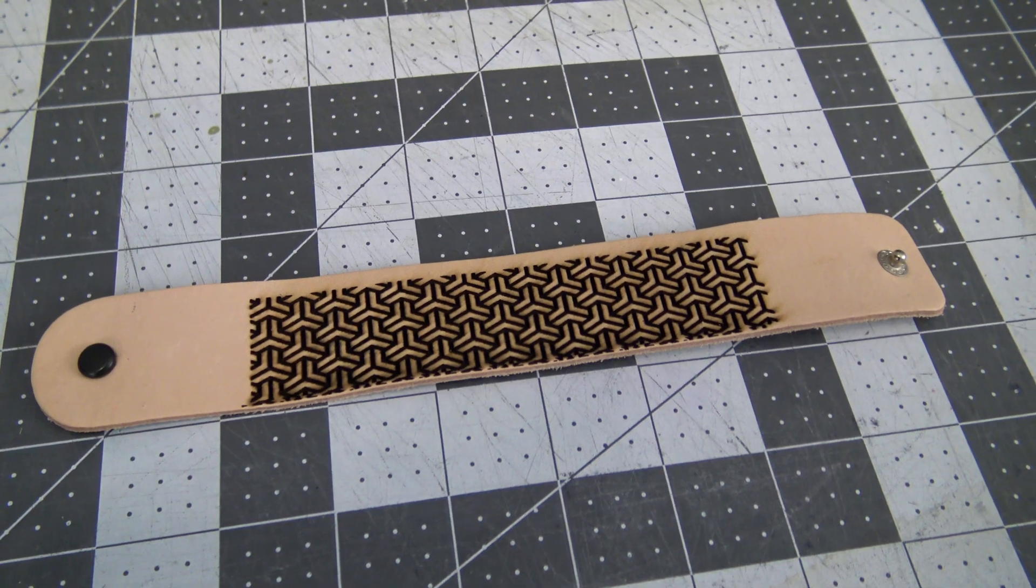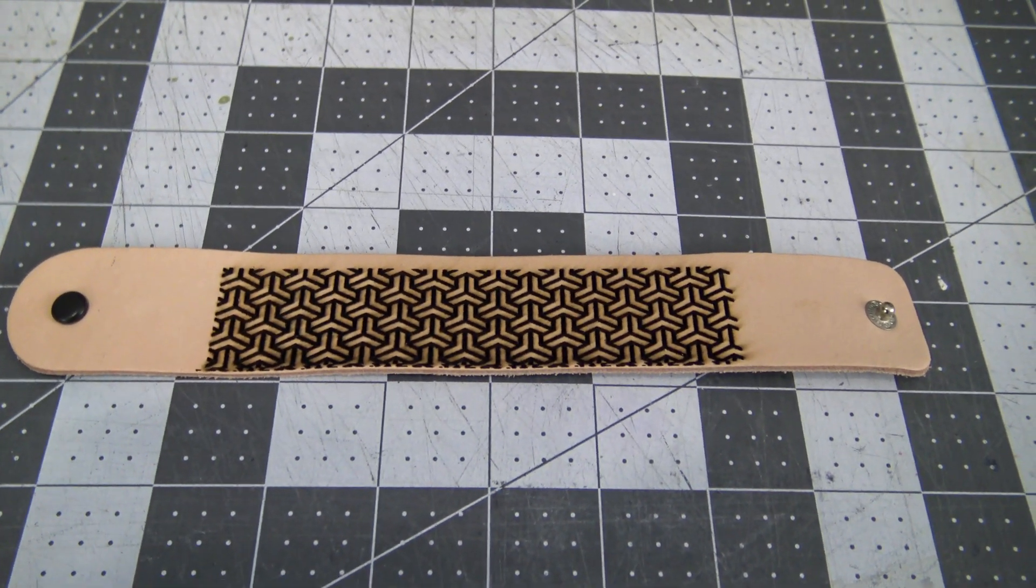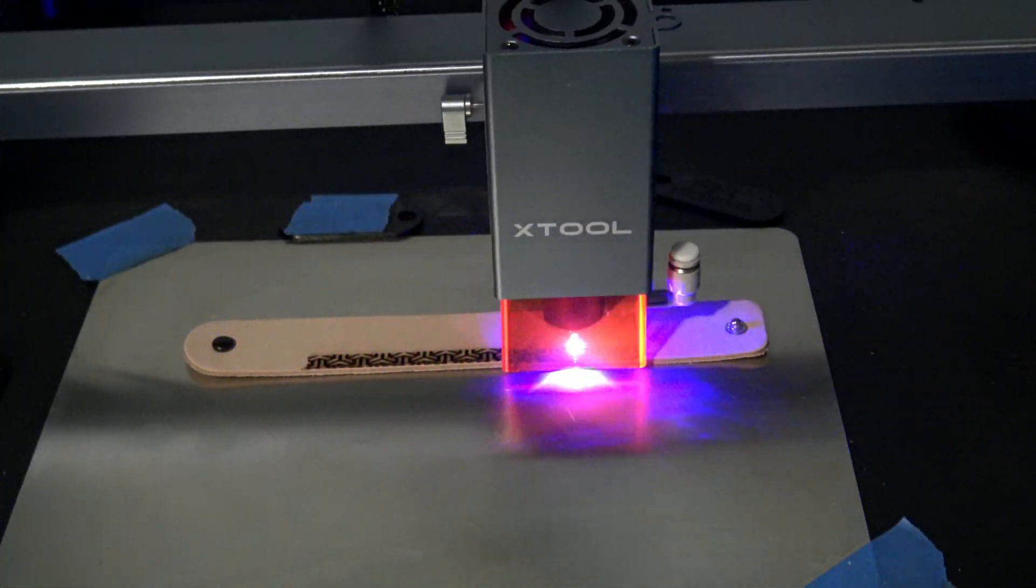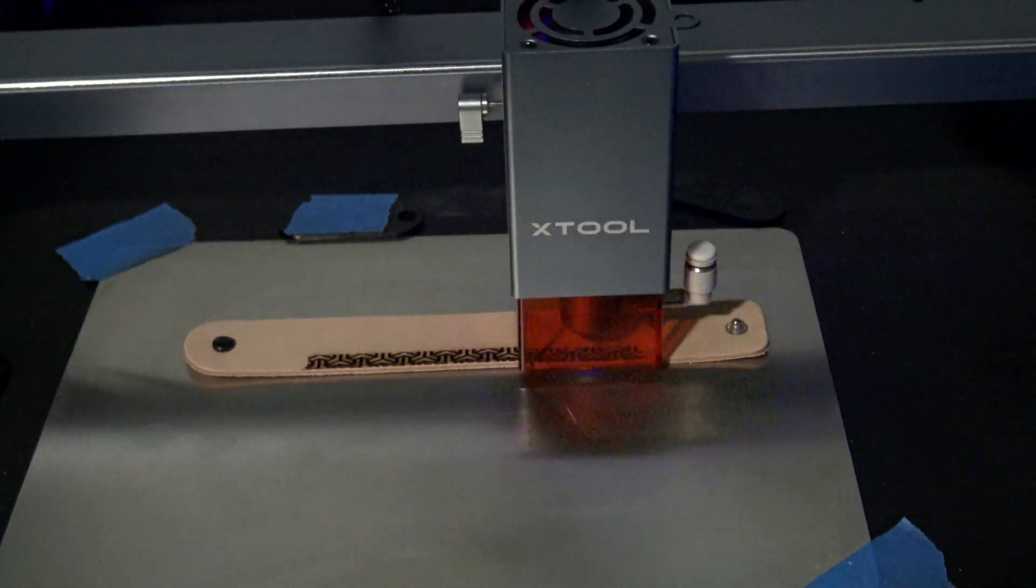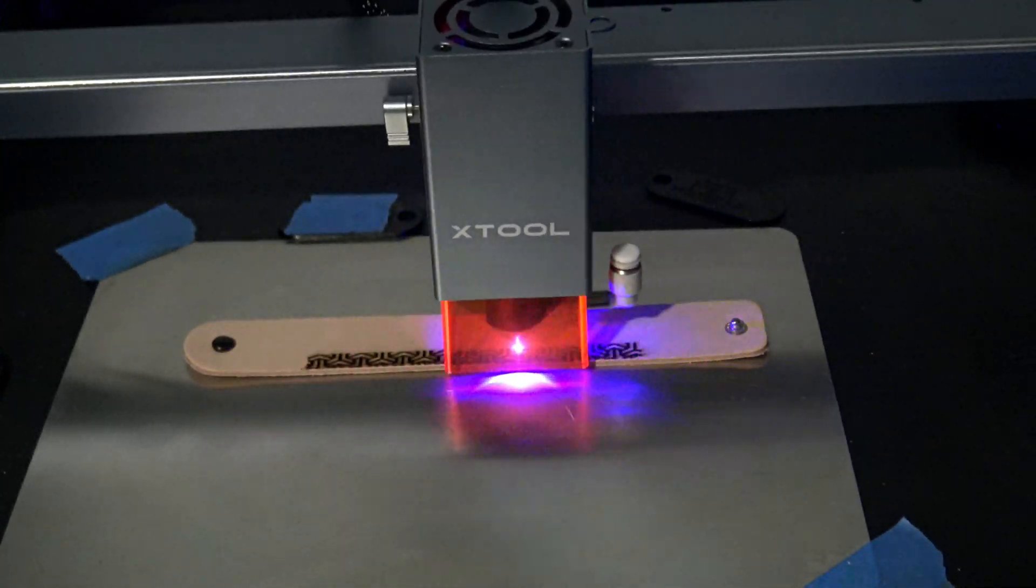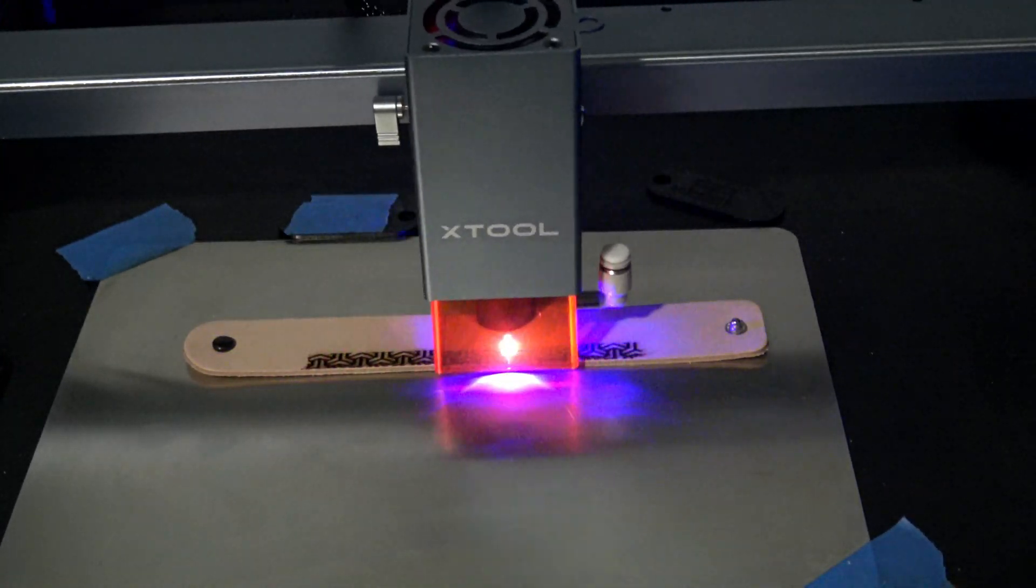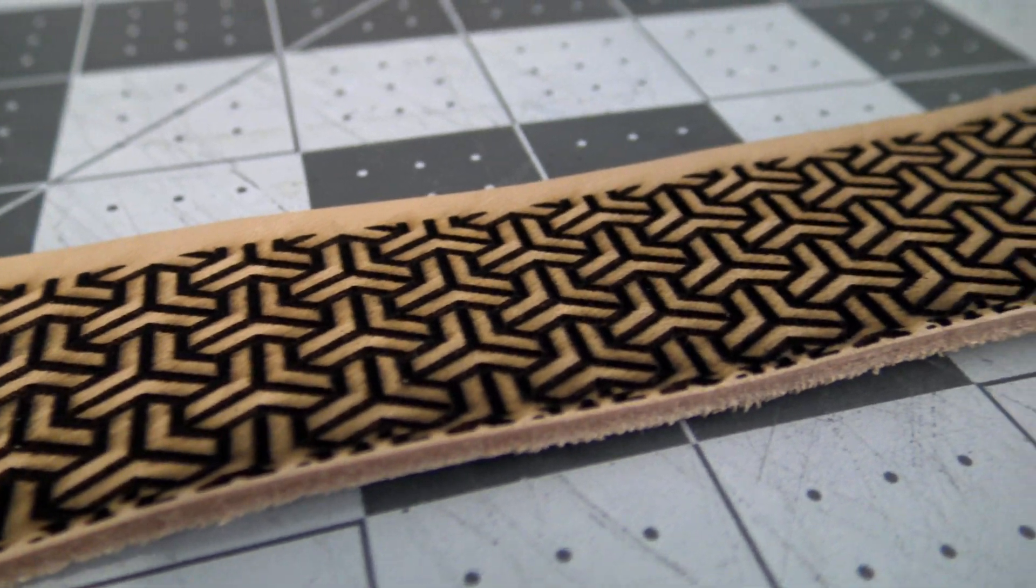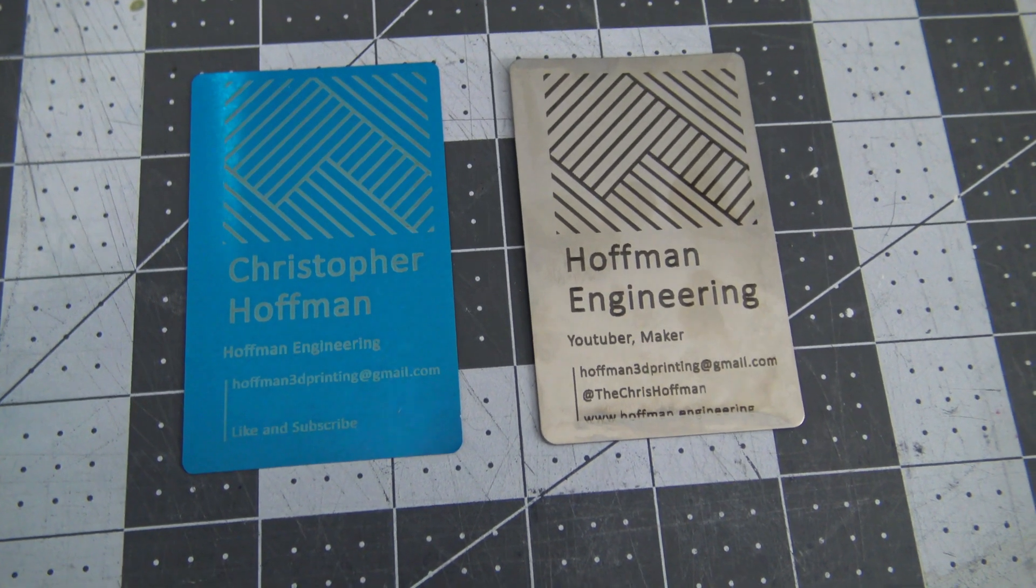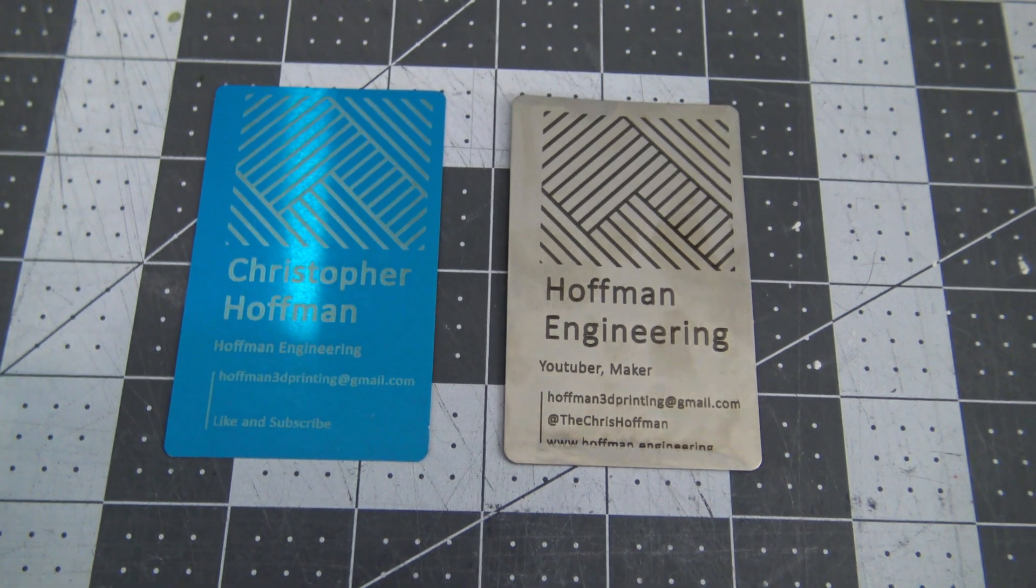Leather is another laser staple. Be careful not to use chrome tan leathers, as those can be dangerous in lasers, but this natural vegetan leather bracelet worked very well in the D1 Pro. This was using the leather settings from the Lightburn library, and this first bracelet is a little too dark for my liking. If I were to do some more, I'd probably turn down the power or increase the movement speed. The 10-watt and 20-watt versions can also engrave a few different metals.